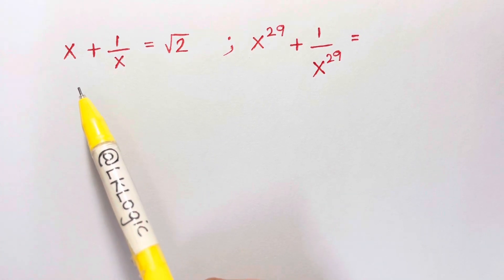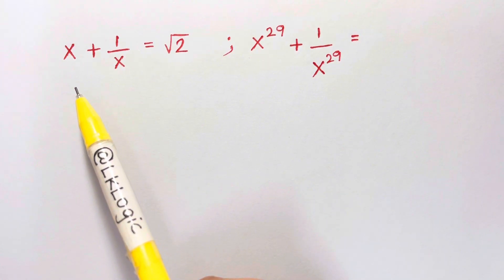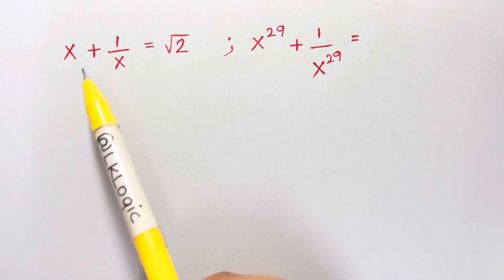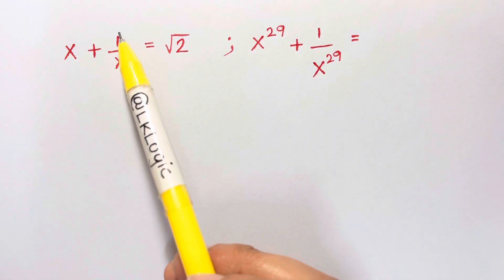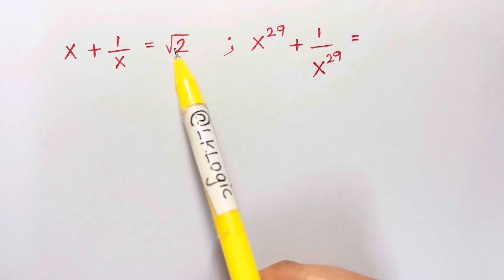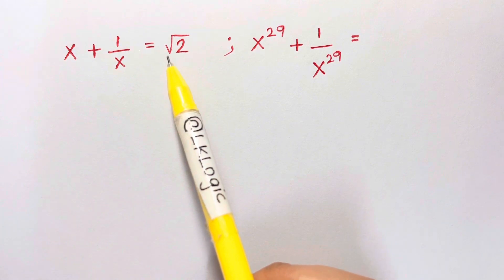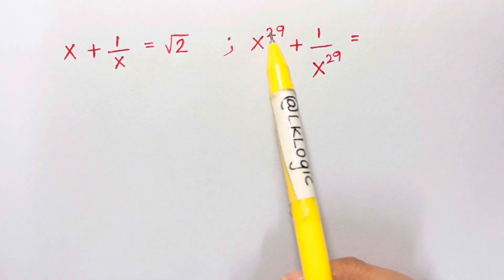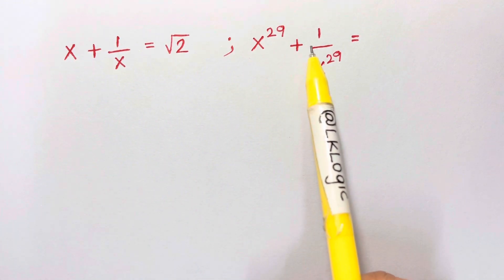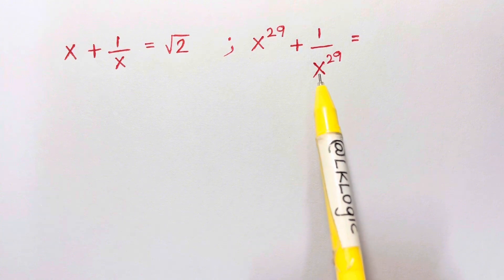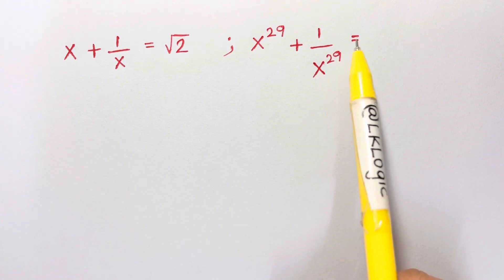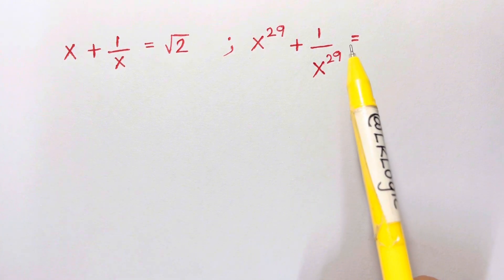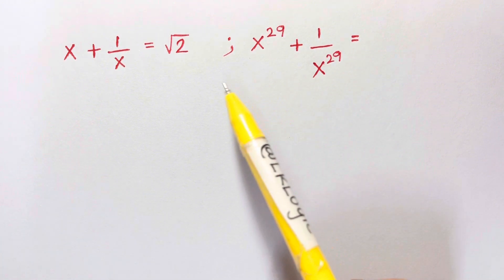Hi guys, I have a nice algebraic problem for you: x plus 1 over x equals root 2. So what is x to the 29 plus 1 over x to the 29?